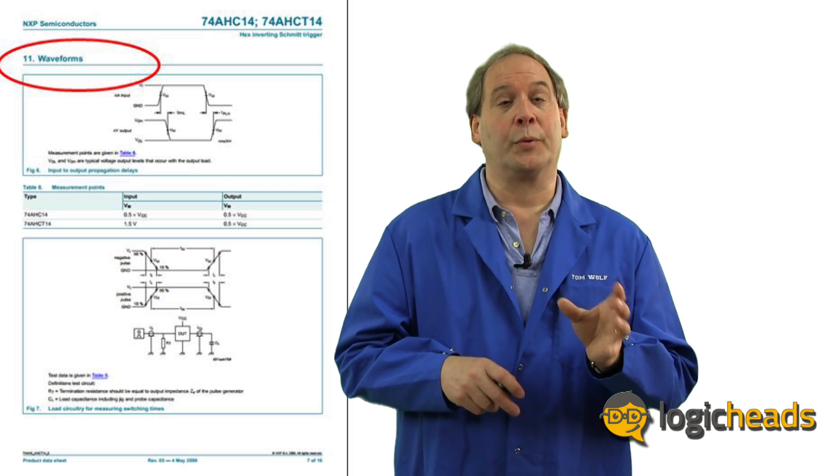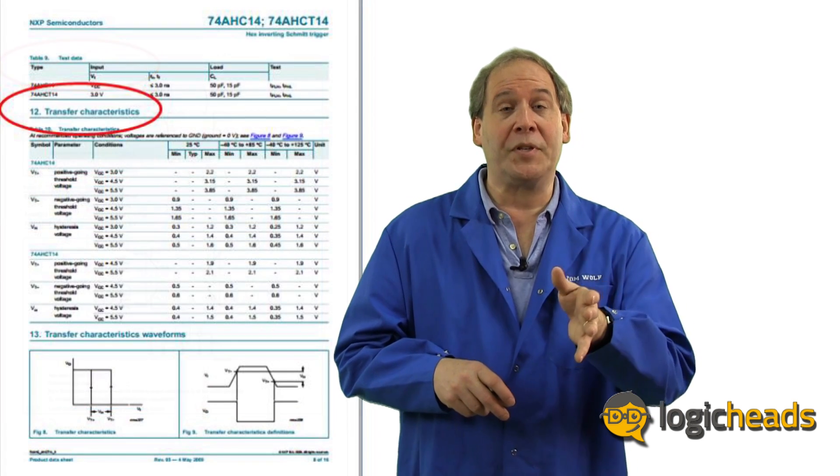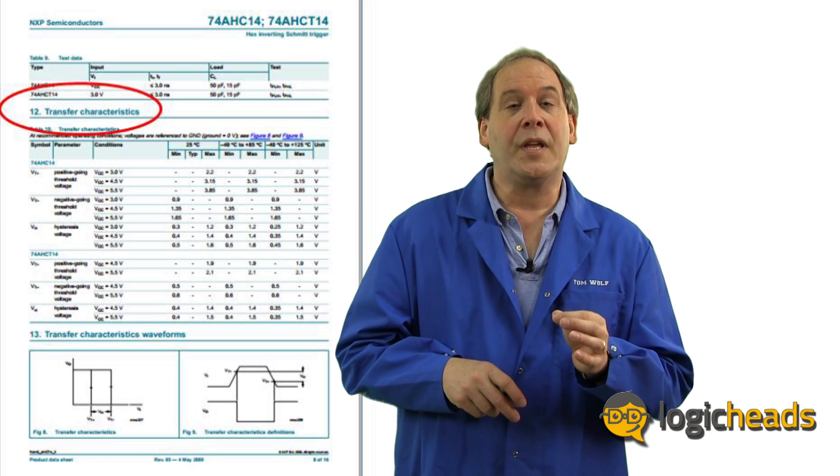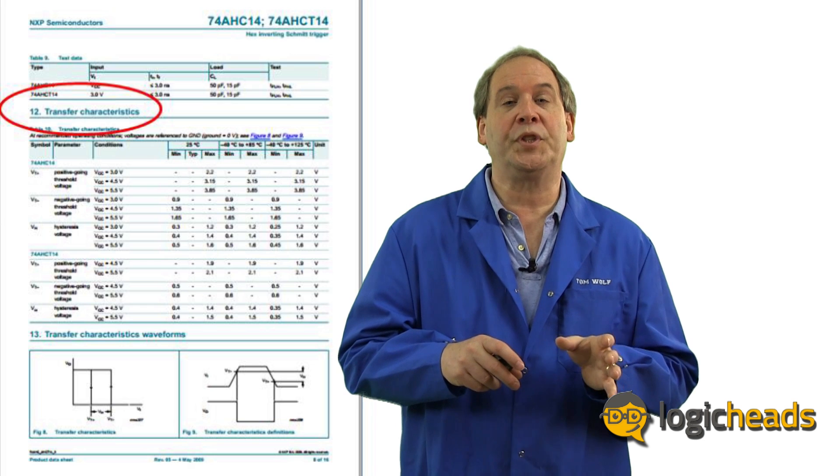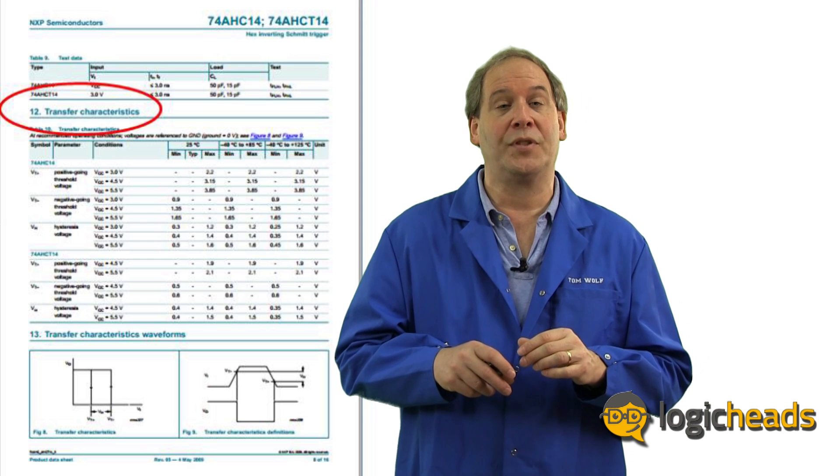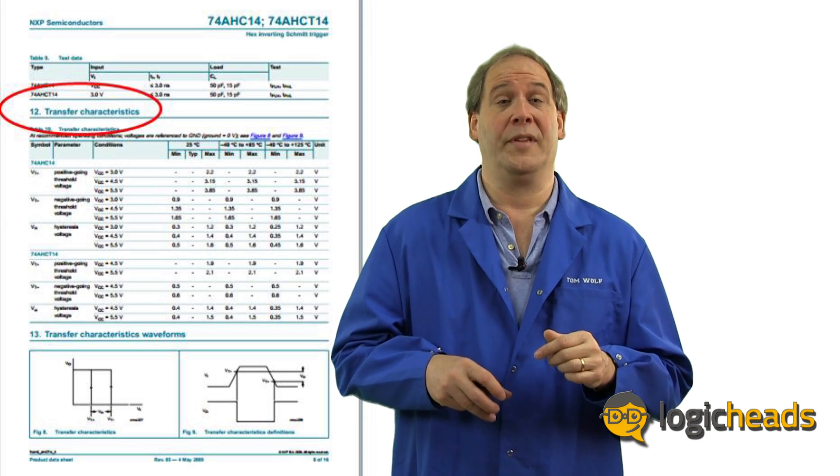Remember before when we talked about true Schmitt triggers and action? Here's the data that confirms that this particular device has true Schmitt trigger inputs, a listing of the transfer characteristics. These tell you how far the voltage must swing in one direction before it can return and then be detected as a new signal transition. If you've got a noisy input signal, you definitely want this feature.